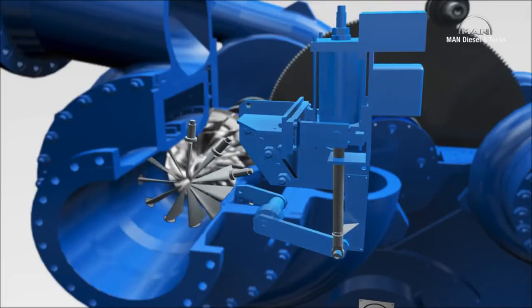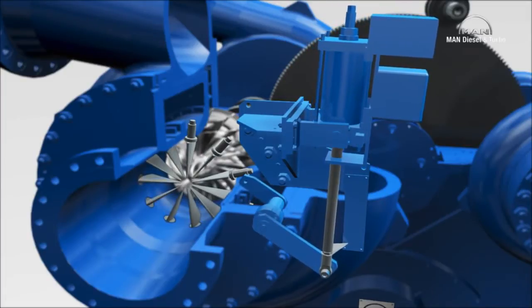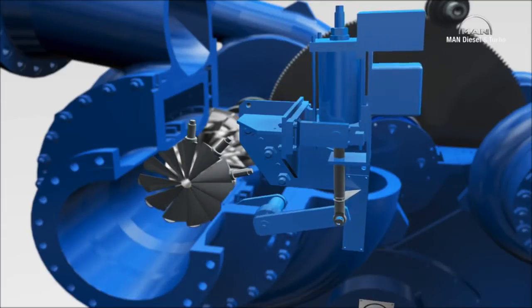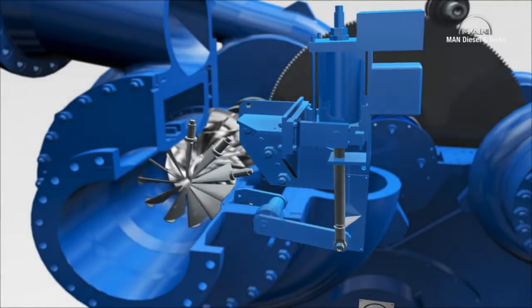Inlet guide vanes are mounted in front of the first stage of each section, here stages one and three. Their blades can be adjusted synchronously, which enables each section to be controlled individually.